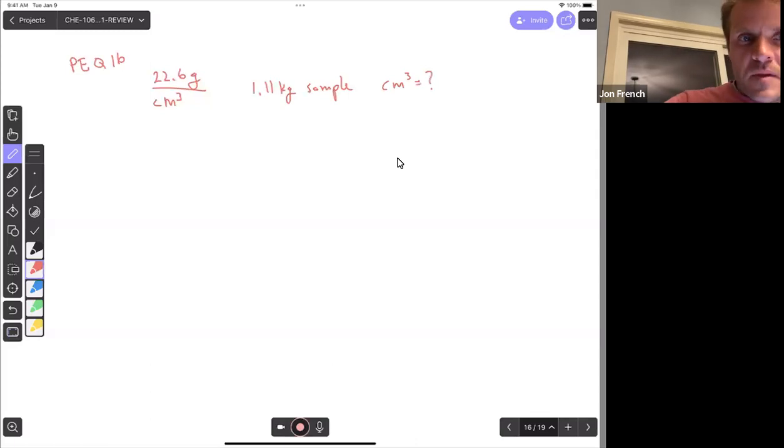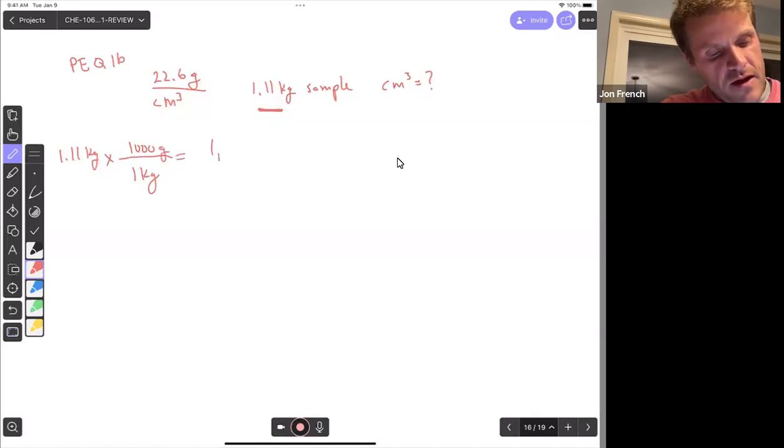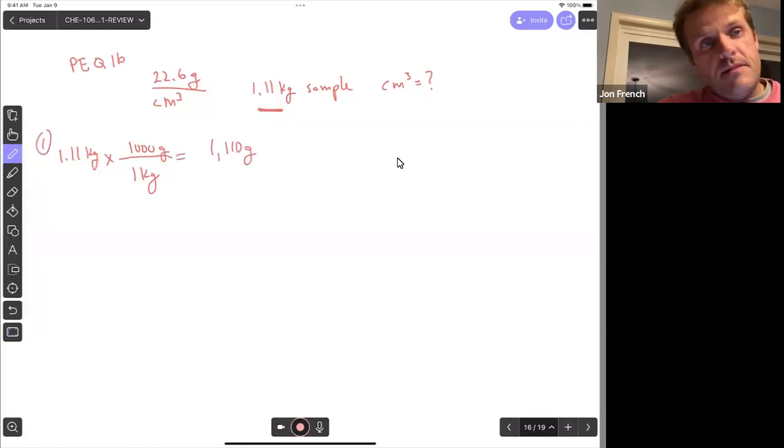They want to know the volume. So our density is grams per cubic centimeter, but our mass is in kilograms. So we have to go kilograms to grams, and then we can use the density. So 1.11 kilograms, I know for every one kilogram you can have a thousand grams. So we've got 1,110 grams sample. Now we're ready to use the density. Density is 22.6 grams for every one cubic centimeter. And that's what we're looking for, volume in cubic centimeters.